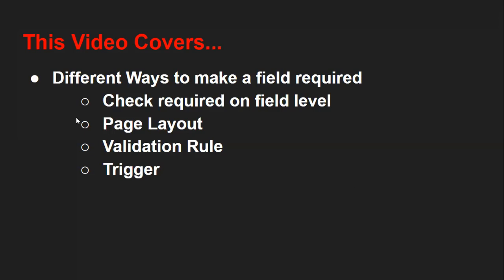There are four different ways through which we can make a field required. While creating a field, there is a checkbox available. If you check that checkbox as true, we can make a field required at that level. Then we have page layout, validation rule, and trigger. I will be demonstrating these four options one by one so that you can understand them practically.